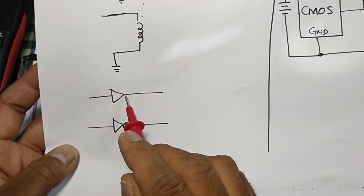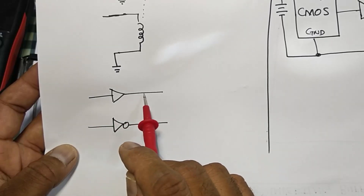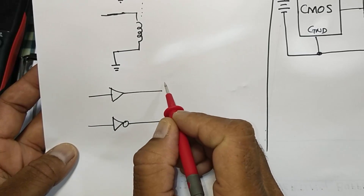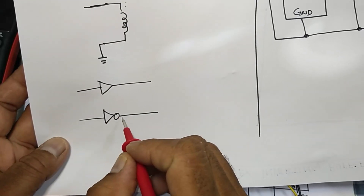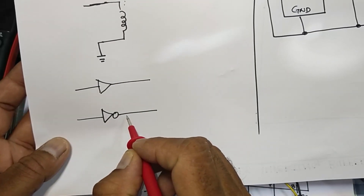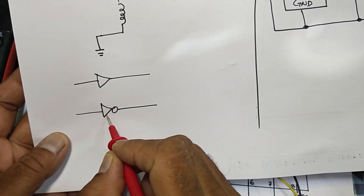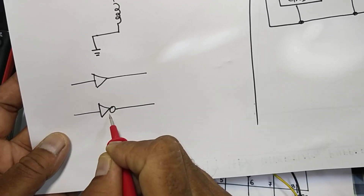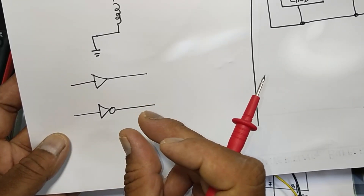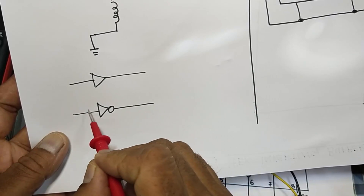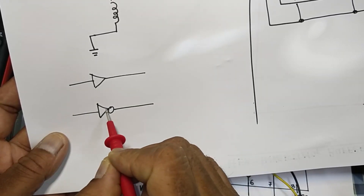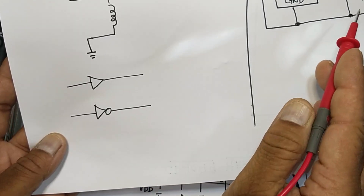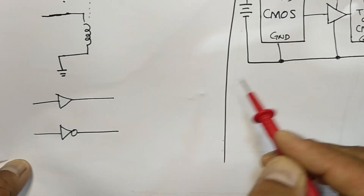A buffer has a symbol like this. This is a simple buffer — if we give a positive signal, the positive signal will go out. The second type is an inverting buffer. An inverter and an inverting buffer have a slight difference. An inverter just only inverts the signal, but the inverting buffer has the capability to drive different circuits.